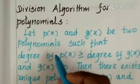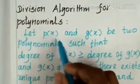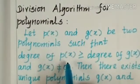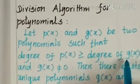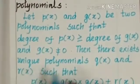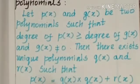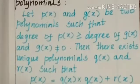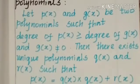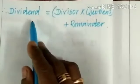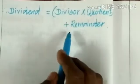Now let us see the division algorithm for polynomials. Let p(x) and g(x) be two polynomials such that degree of p(x) is greater than or equal to degree of g(x), and g(x) ≠ 0. Then there exist unique polynomials q(x) and r(x) such that p(x) = g(x) × q(x) + r(x). Here p(x) is the dividend, g(x) is the divisor, q(x) is the quotient, and r(x) is the remainder. That is, dividend = divisor × quotient + remainder.